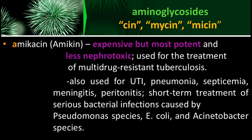Next is amikacin, brand name Amikin — very expensive but the most potent aminoglycoside and less nephrotoxic. It is used for patients with multi-drug resistant tuberculosis (MDR-TB), where the microorganism has become resistant to standard TB medications, making amikacin a necessary treatment option.